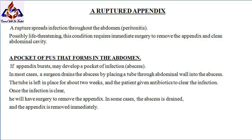A ruptured appendix spreads infection throughout the abdomen — peritonitis — which is possibly life-threatening. This condition requires immediate surgery to remove the appendix and clean the abdominal cavity. A pocket of pus, or abscess, may also form in the abdomen if the appendix bursts.